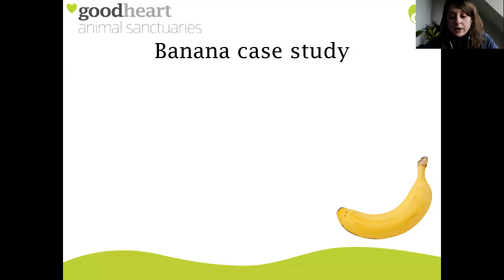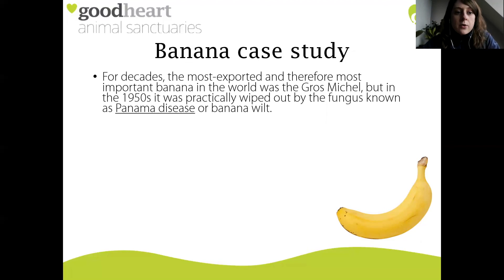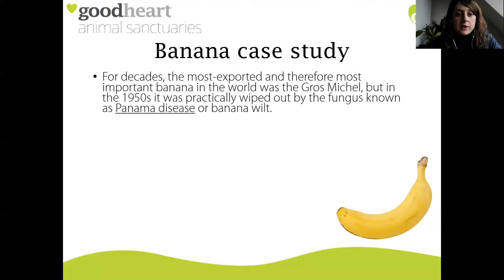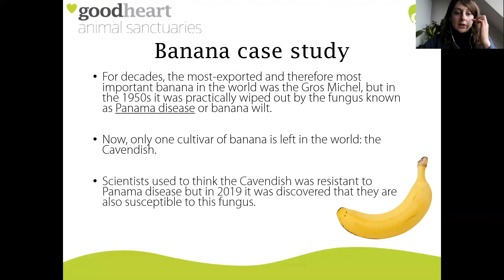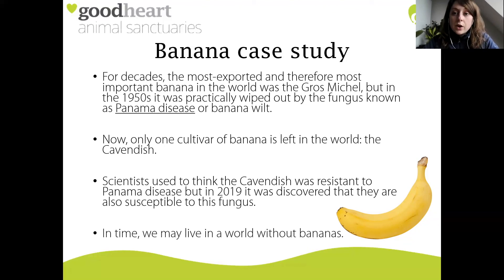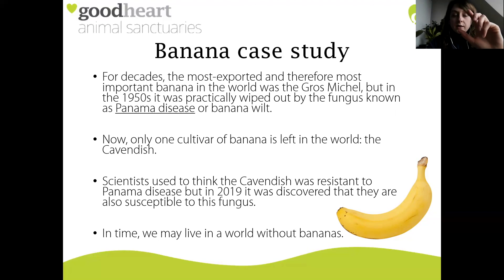For decades, the most exported and therefore most important banana in the world was the Gros Michel, also known as the Big Mike. But in the 1950s it was practically wiped out by a fungus known as Panama disease or banana wilt. Across the entire world there is now only one cultivar of banana left - the Cavendish. Scientists used to think the Cavendish was resistant to Panama disease, but in 2019 it was discovered that they are also susceptible to this very fungus. This means in time we may live in a world without bananas, because when that single cultivar is wiped out due to its lack of genetic diversity, there will be no more bananas in the world.